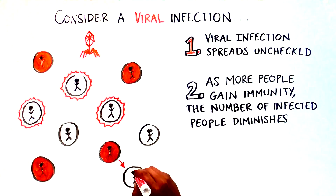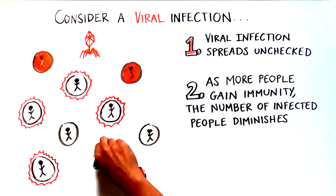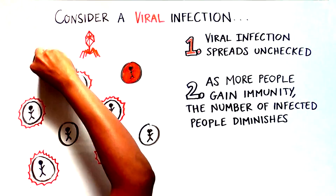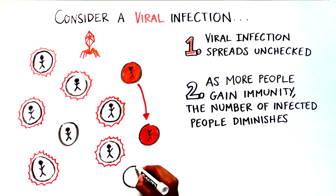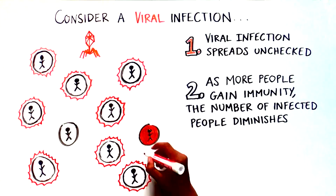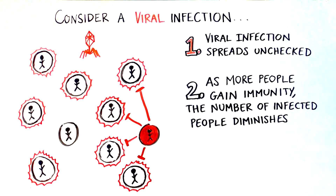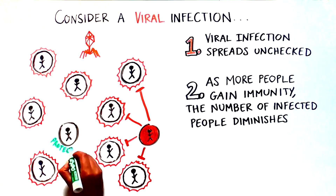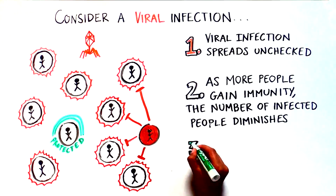What happens as this continues? At a certain point, the virus runs out of places to go, and the spread of the virus is under control. Even those who haven't been infected or vaccinated are protected. We have achieved herd immunity.